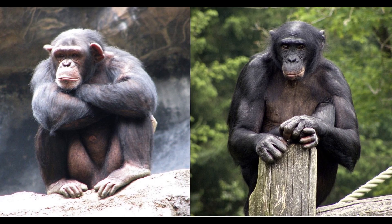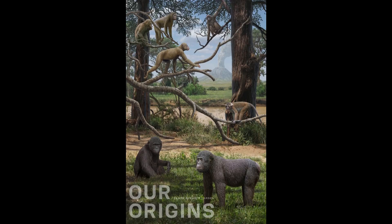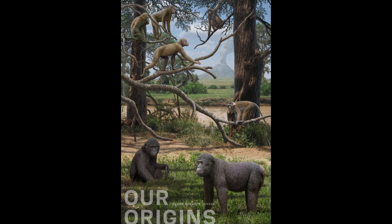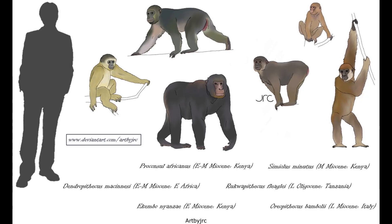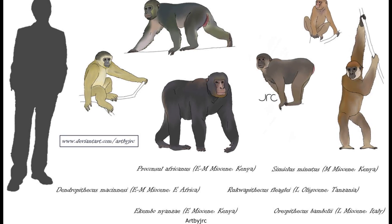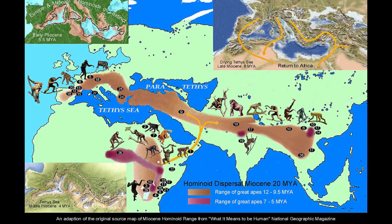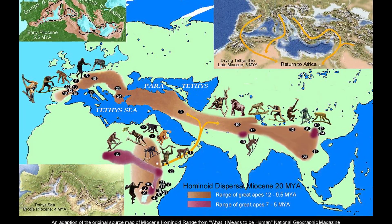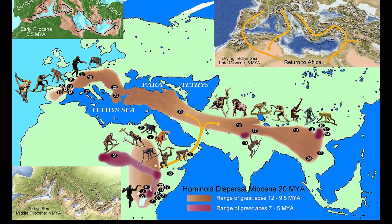During the Oligocene, the lineage that led to modern apes diverged from that of the Old World monkeys. These were the hominoids — tailless arboreal animals that first appear in the early Miocene deposits of East Africa. Being relatively small and rather monkey-like compared to modern apes, these stem hominoids inhabited tropical forests widespread across Africa at this time. As their home continent pushed northwards and collided with Eurasia, hominoids took part in a significant faunal exchange, accompanied by fellow African mammals such as proboscideans and hyracoids.